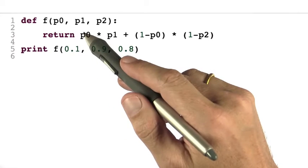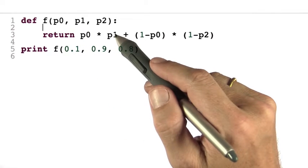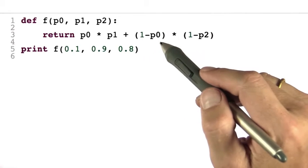It first considers the possibility of cancer, multiplies it with its test sensitivity, p1, and then it observes the opposite possibility.